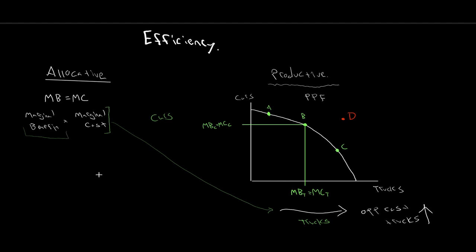We also looked at marginal benefit — the extra benefit received from consuming or buying an extra truck. The first truck bought provides lots of extra benefit, but as society has more and more trucks on the road, there's not necessarily as much extra benefit — not everyone needs to haul a trailer or fill it with gravel. So as we have more and more of the same thing, the extra benefit we receive is diminishing: increasing marginal cost, decreasing marginal benefit.